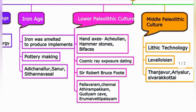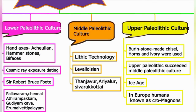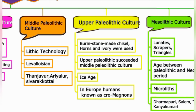Lower Paleolithic culture: hand axes, Acheulian, hammer stones, bifaces. Robert Bruce Foote discovered tools at Pallavaram, Chennai; Attirampakkam; and Gudiyam Cave. Middle Paleolithic culture: Lithic Technology, Levalloisean technique — sites include Tanjavur, Ariyalur, and Sivarakotai. Upper Paleolithic culture: burin, stone-made chisel, horns and ivory. Upper Paleolithic succeeded Middle Paleolithic. Ice Age in Europe — humans known as Cro-Magnons.